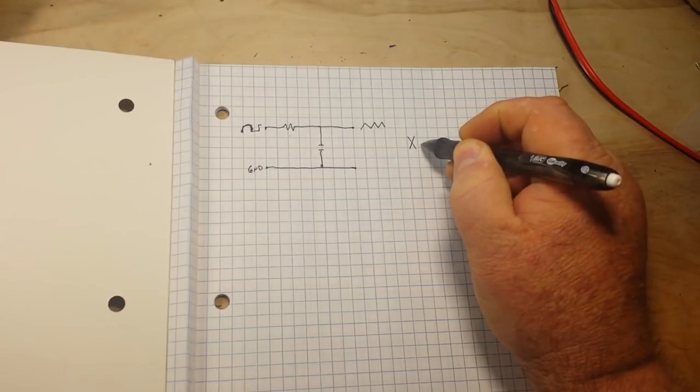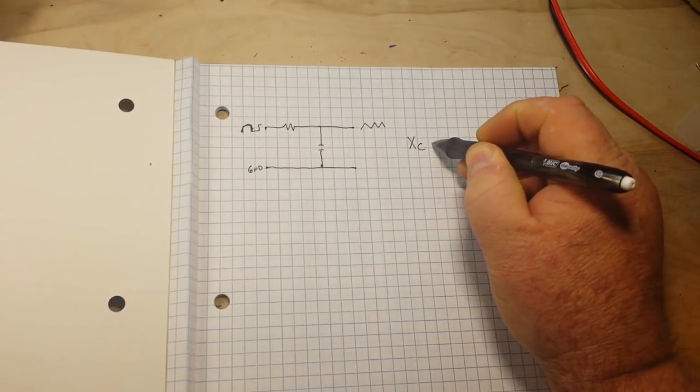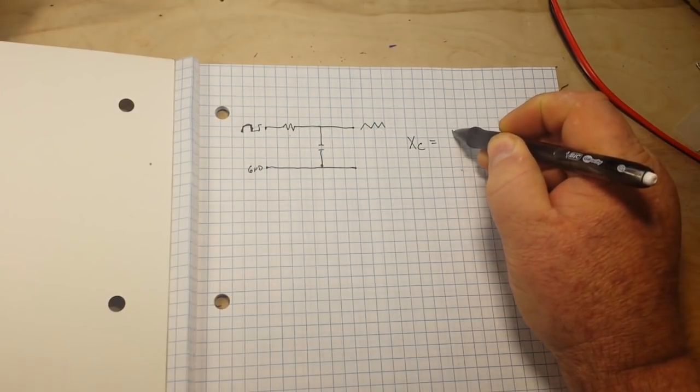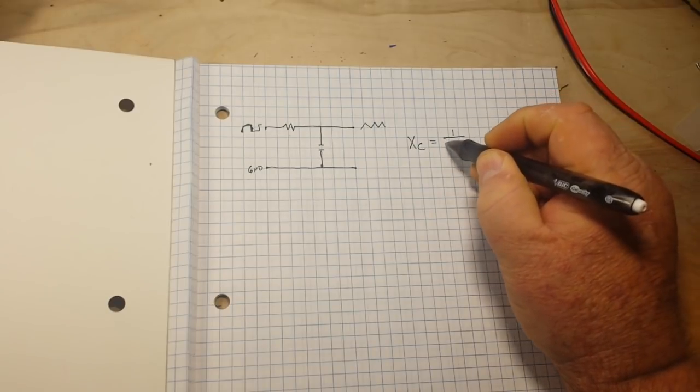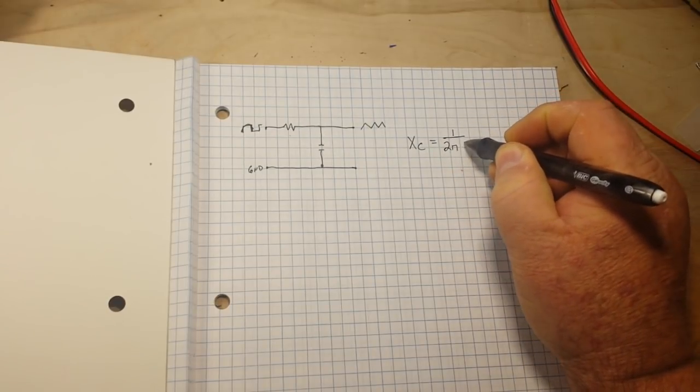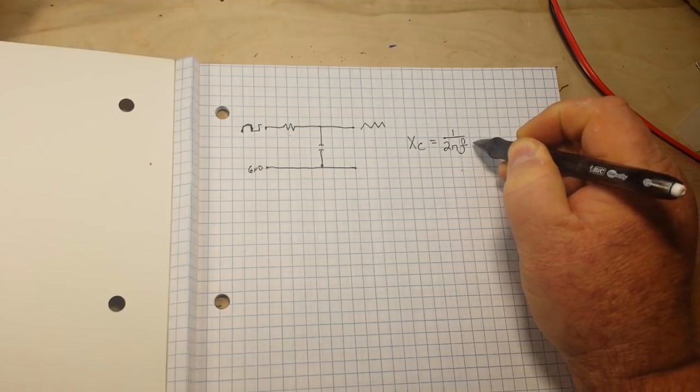And that can be found here. Capacitive reactance is equal to the reciprocal of two pi frequency times capacitance.